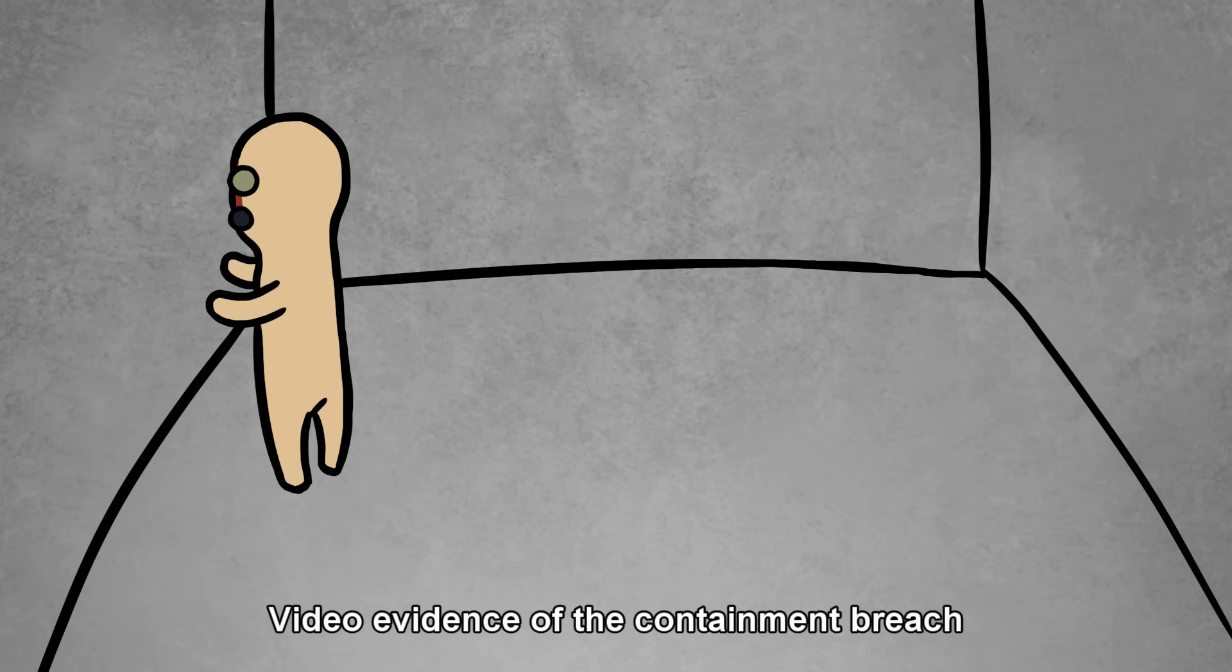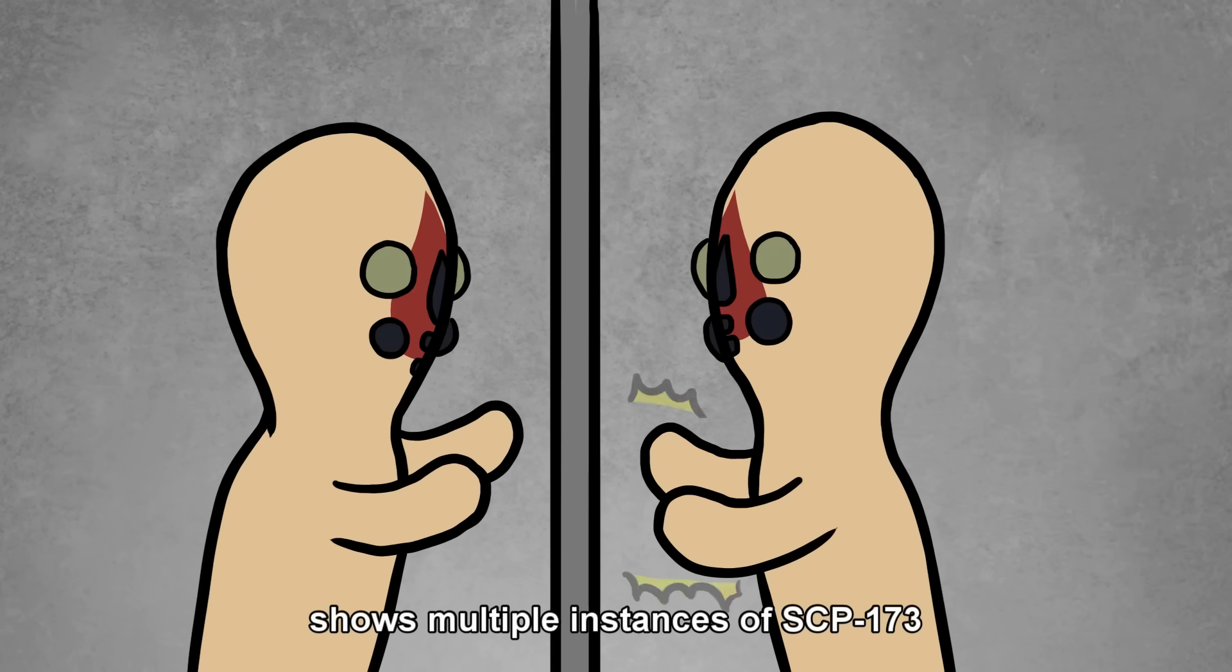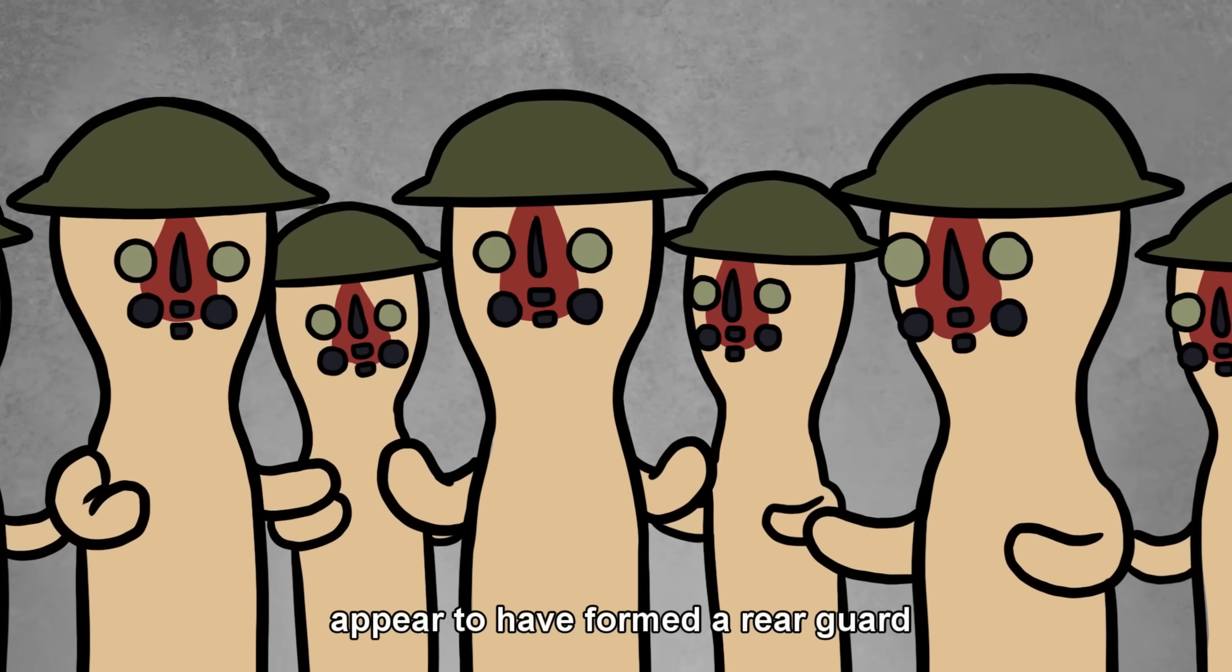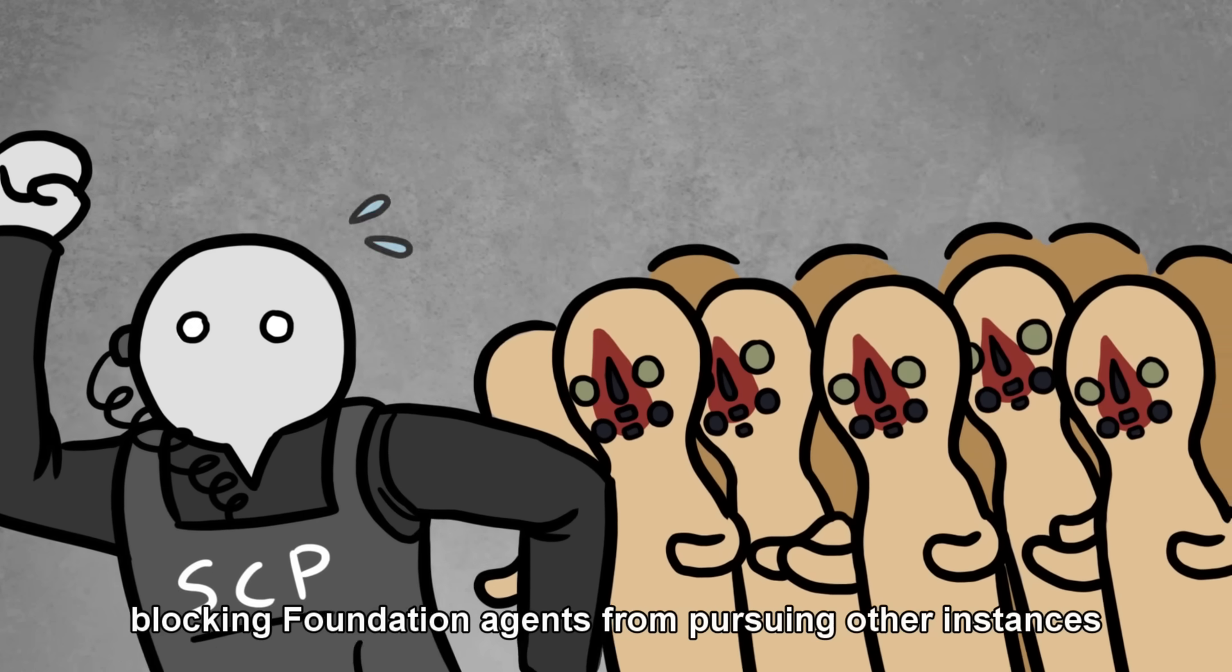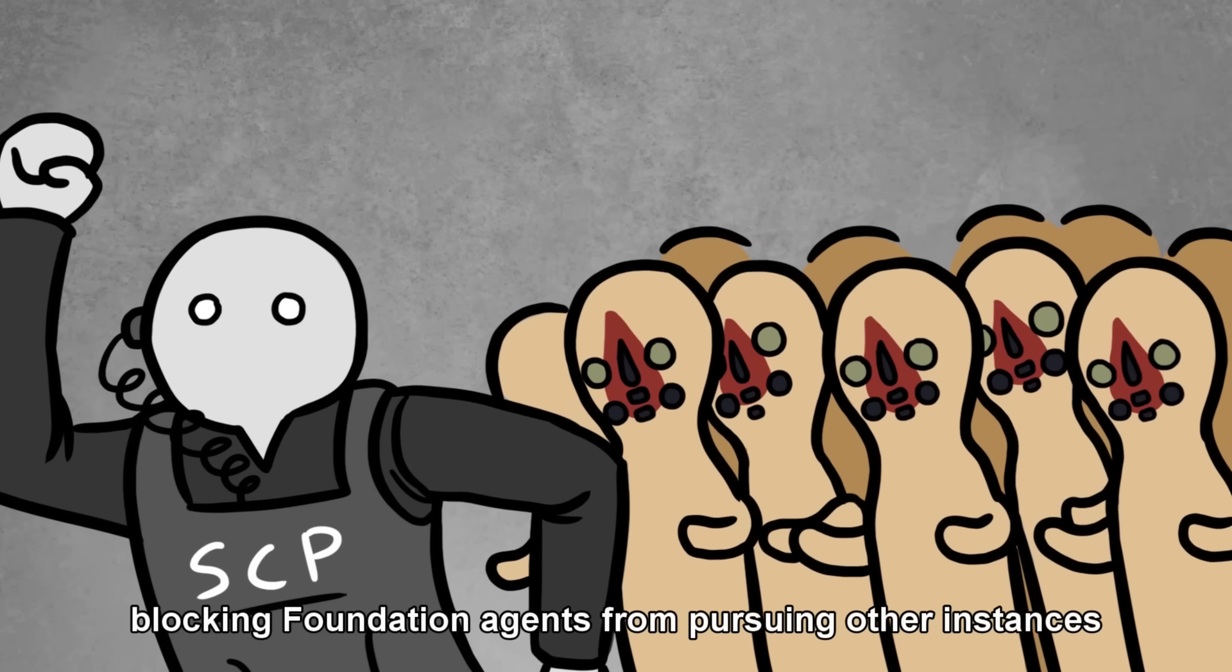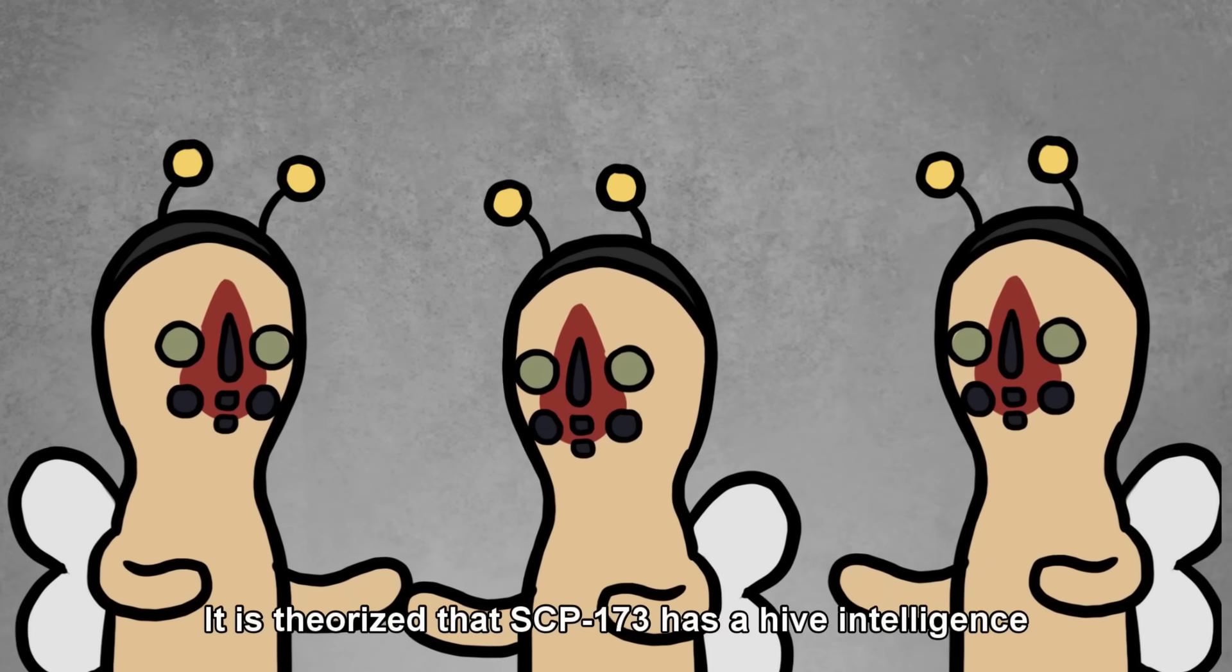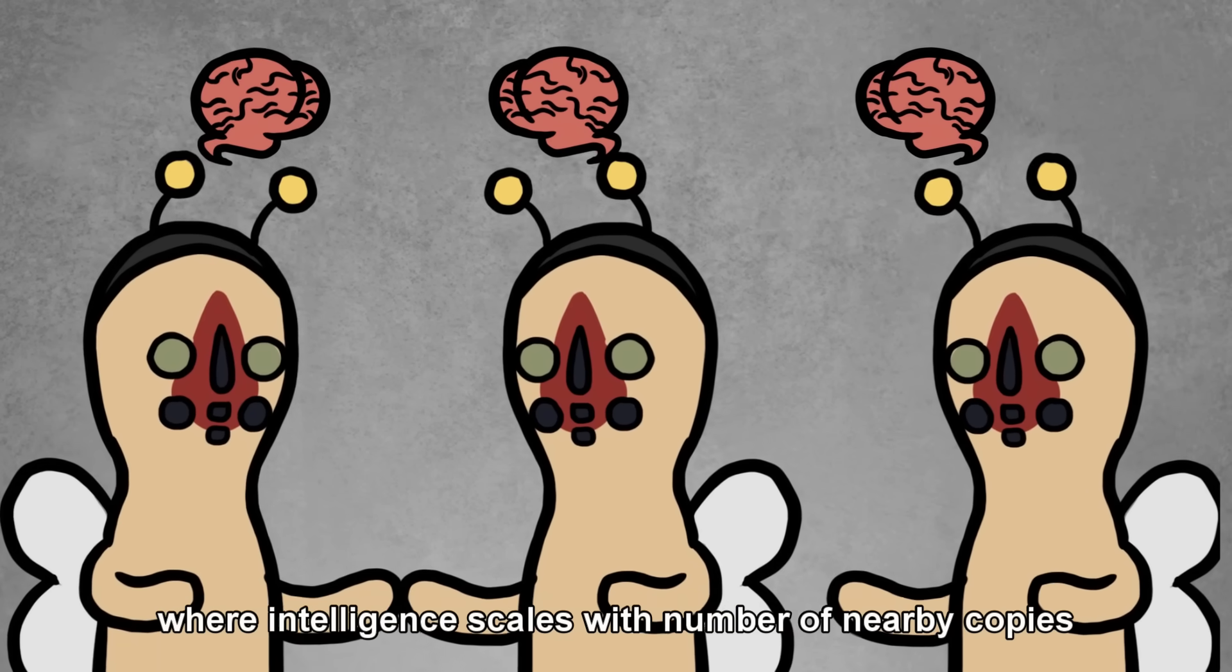Video evidence of the containment breach shows multiple instances of SCP-173 working in unison across multiple cells to achieve the breach. Most of the instances still in captivity appear to have formed a rear guard, blocking Foundation agents from pursuing other instances. It is theorized that SCP-173 has a hive intelligence, where intelligence scales with number of nearby copies.